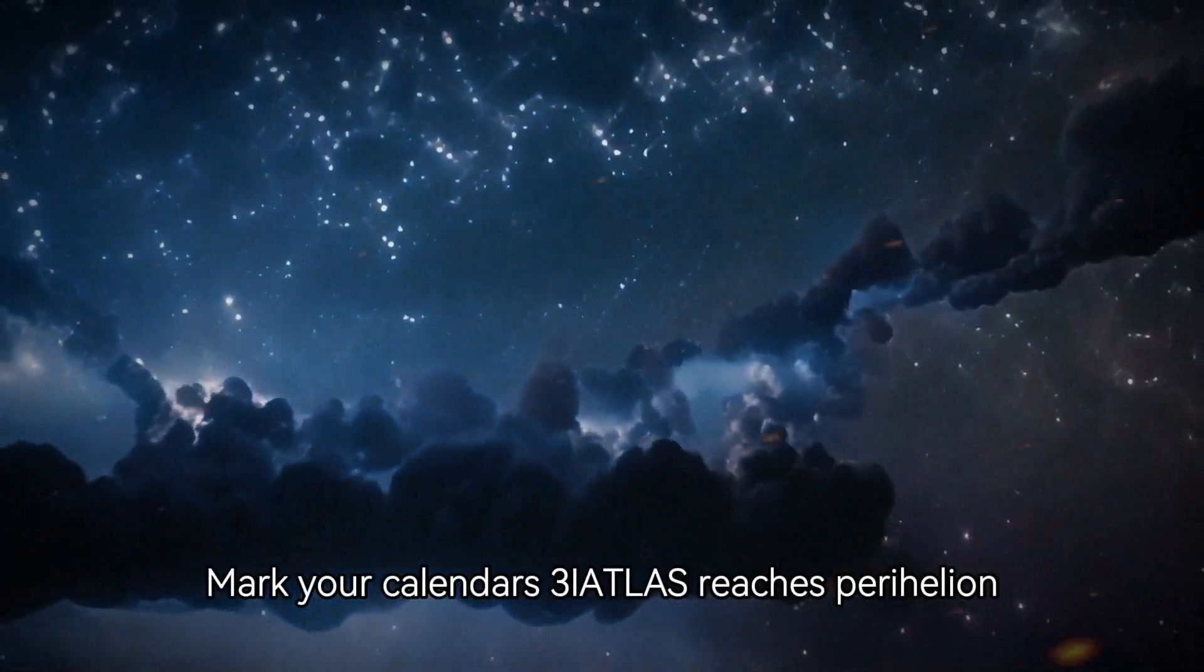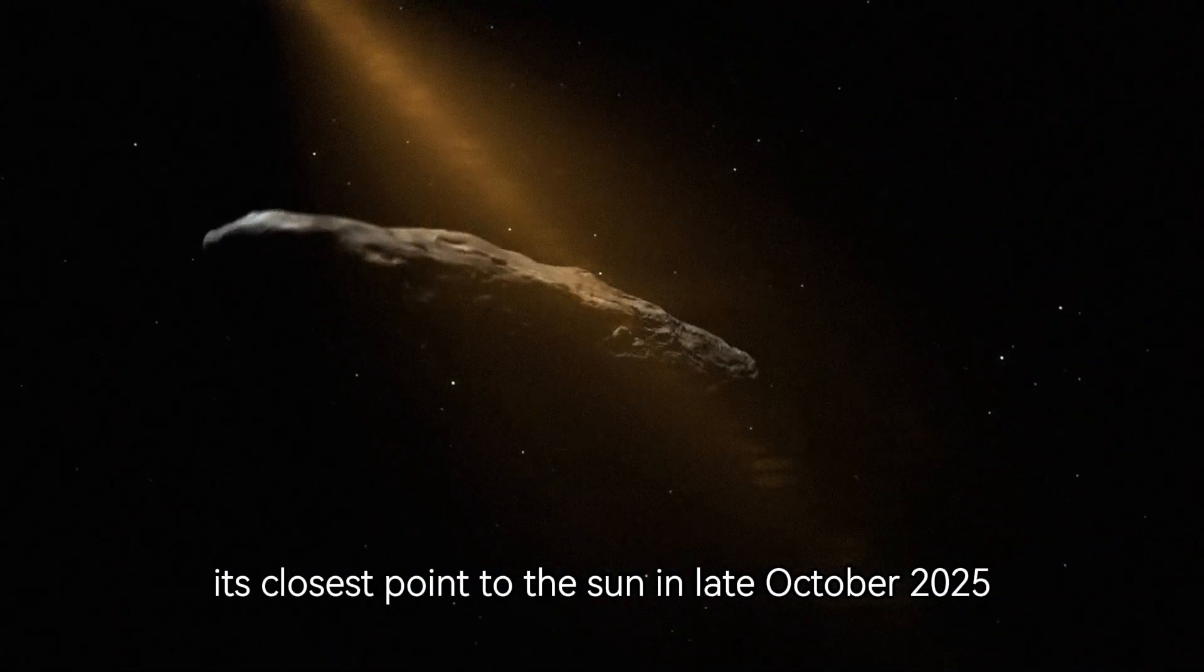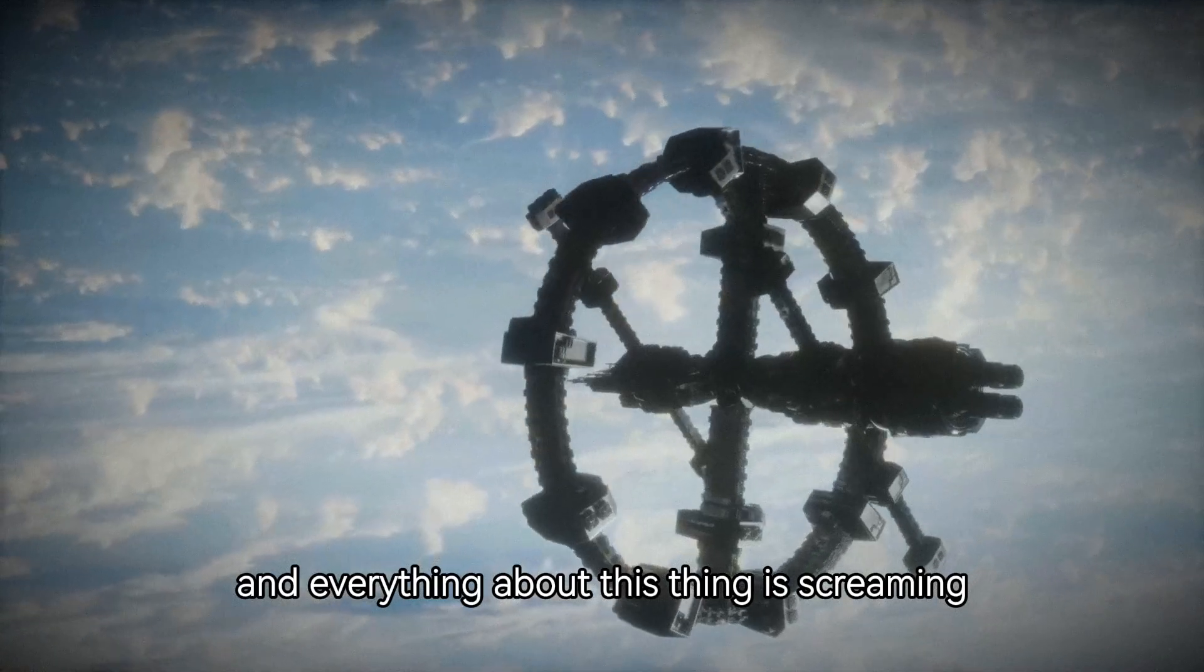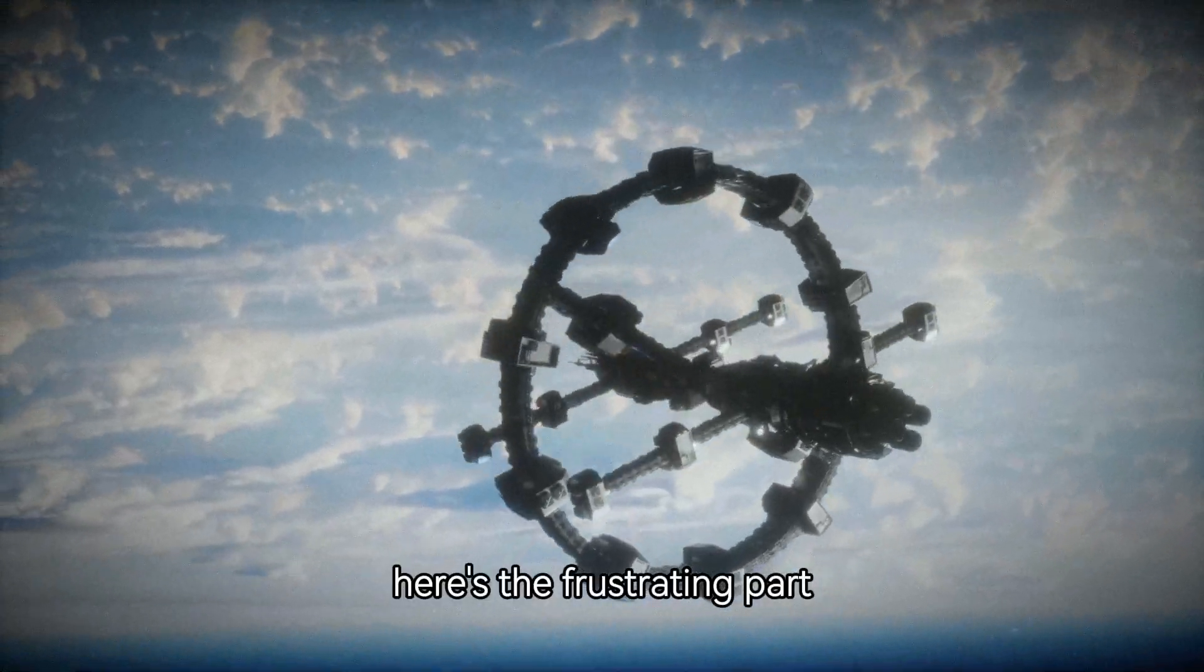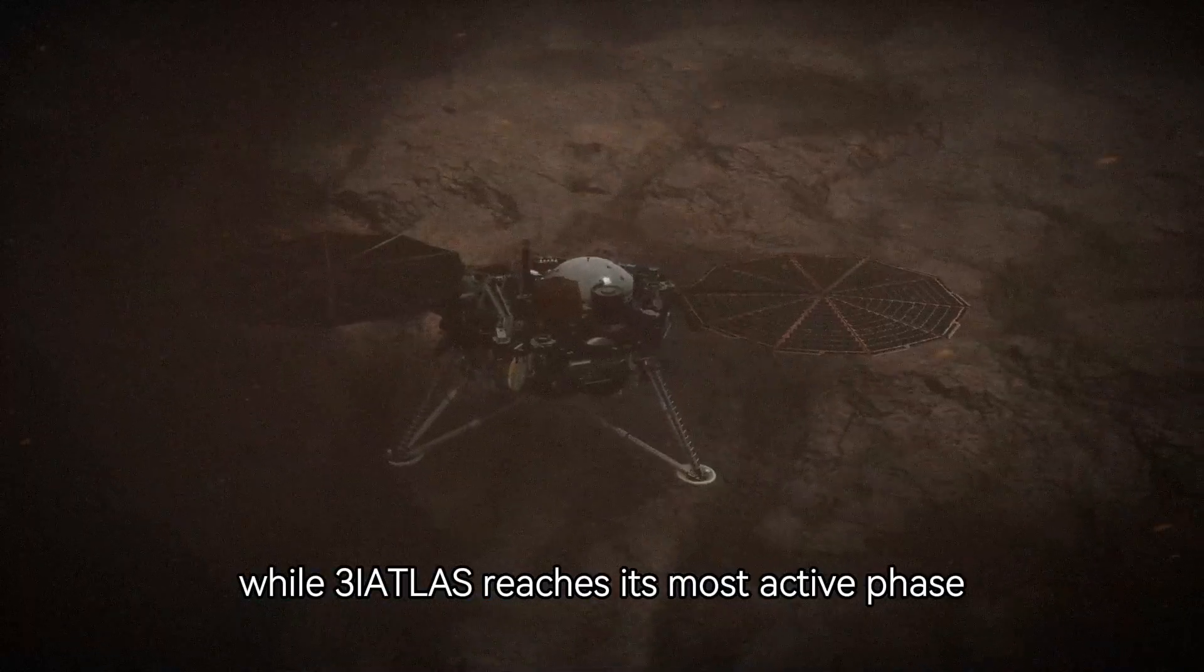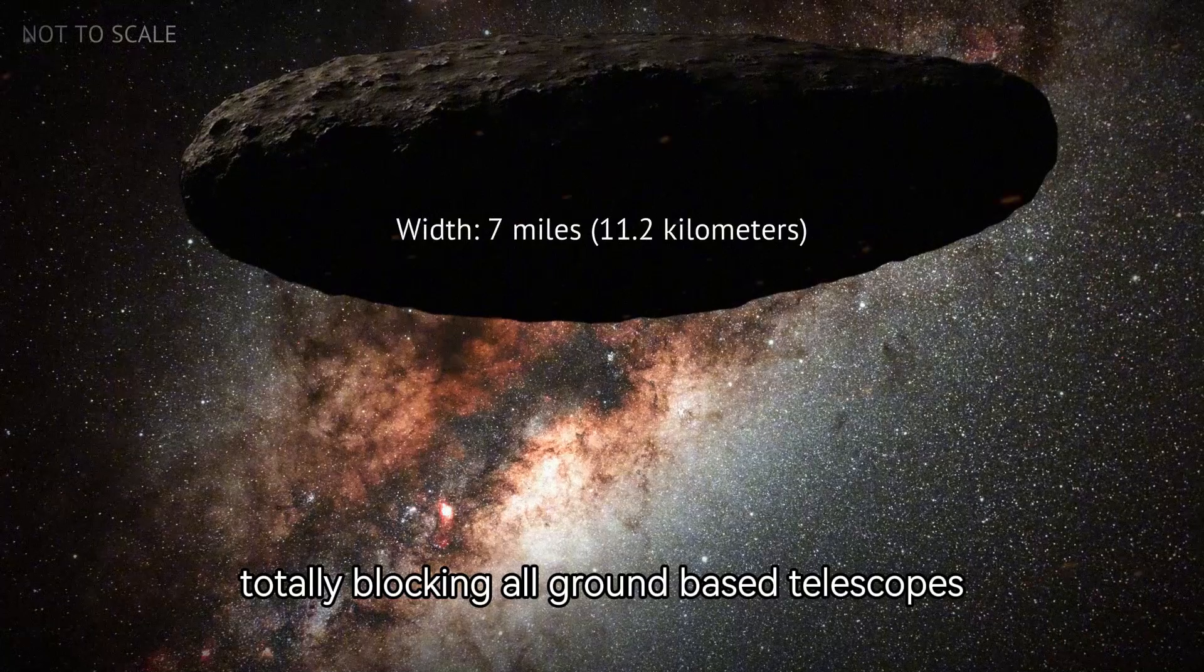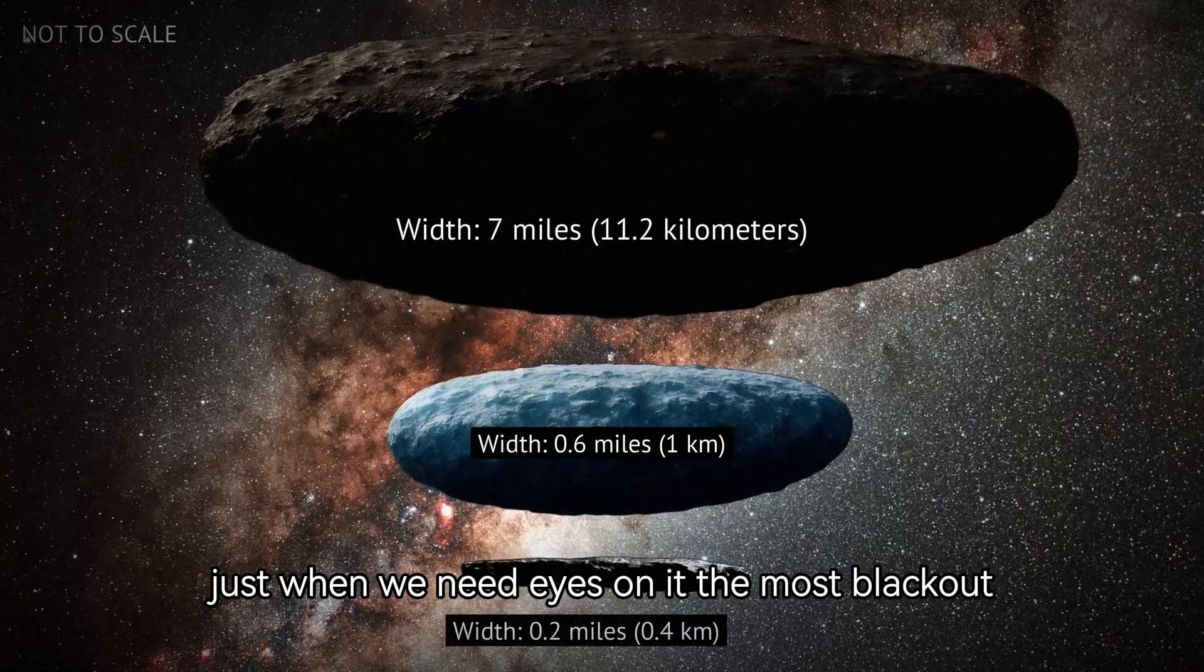Mark your calendars. 3i Atlas reaches perihelion, its closest point to the sun, in late October 2025, sitting at about 1.4 astronomical units. And everything about this thing is screaming that it's not your average space rock. Here's the frustrating part. While 3i Atlas reaches its most active phase, it's going to be completely hidden from Earth. Why? Because from our angle, it'll be behind the sun, totally blocking all ground-based telescopes. Just when we need eyes on it the most, blackout.